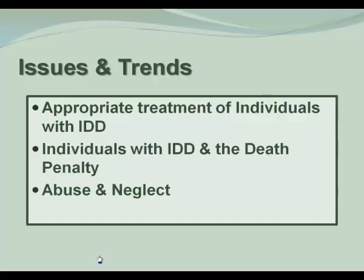Appropriate treatment of individuals with IDD continues to be a problem in our society and in other societies. Individuals with IDD and the death penalty is quite controversial — the Supreme Court has ruled that you cannot put a person with mental retardation to death, so the question becomes: when is that person diagnosed as having IDD — before the crime or after the crime? It's highly controversial. Abuse and neglect continues to be a great issue; it not only causes disabilities, but these children are more vulnerable to abuse and are more likely to pass it on to the next generation.